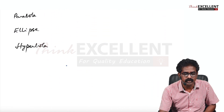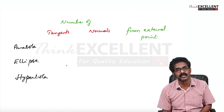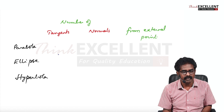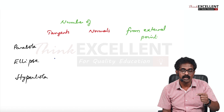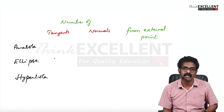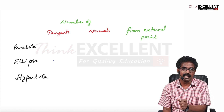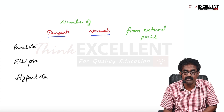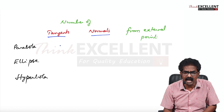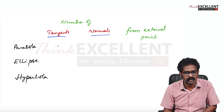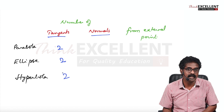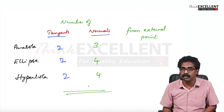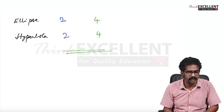The last result: how many tangents and normals can be drawn from an external point? For tangents, from a parabola, ellipse, or hyperbola, the number of tangents is always two. For normals: from a parabola it is three; for ellipse and hyperbola it is four. Remember this table — they can ask this directly or as true/false statements.